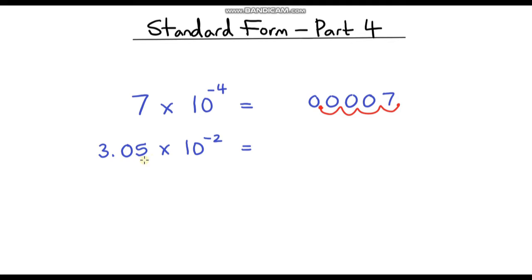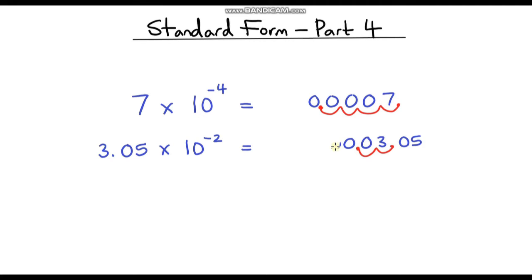Here's another example: 3.05 times 10 to the power negative 2. So our base is 3.05, so let's write that down, and we know we're going to have some zeros in front of our number. We are dividing by 10 two times, so our decimal point is here at the moment at 3.05, and we're going to move our decimal point to the left two times: 1, 2. So our answer is 0.0305.